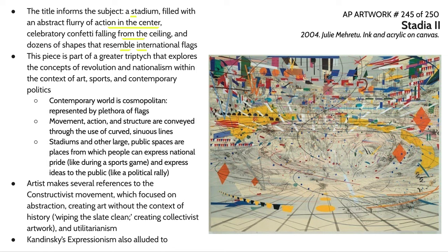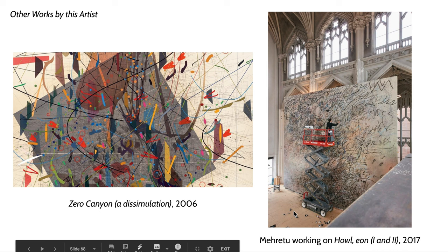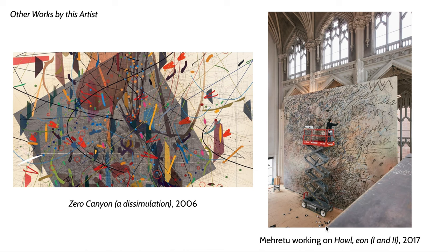It's really difficult to convey in these slides, but Mehretu's work is typically very large. Here she is on a lift in a church in Harlem producing a massive work just a couple of years ago. A lot of her works are of large scale — you can see the pile of rags she's using to blend the colors on the floor.